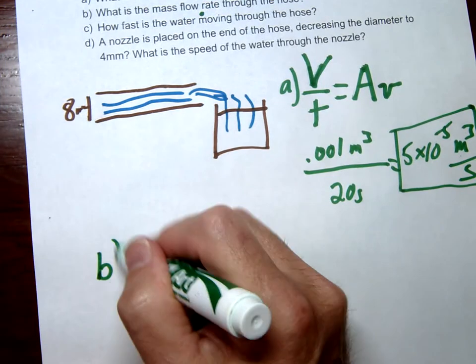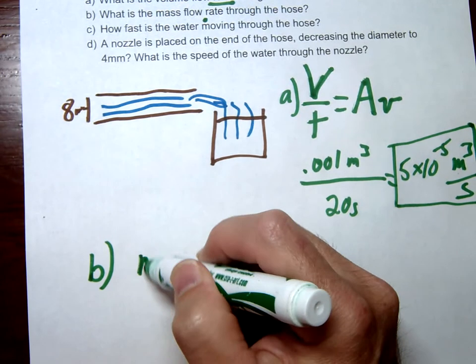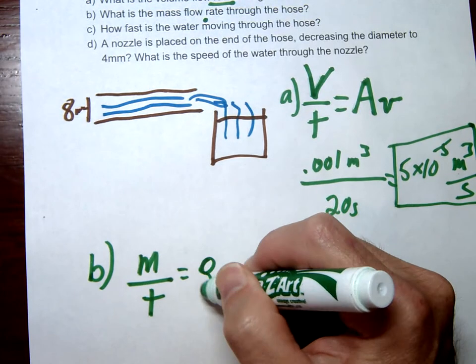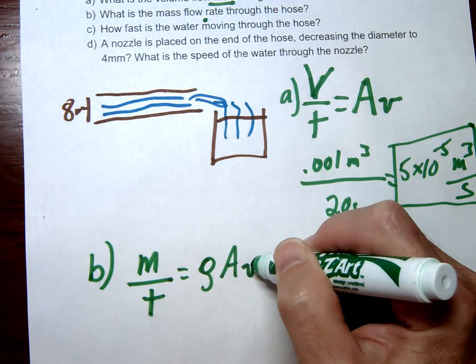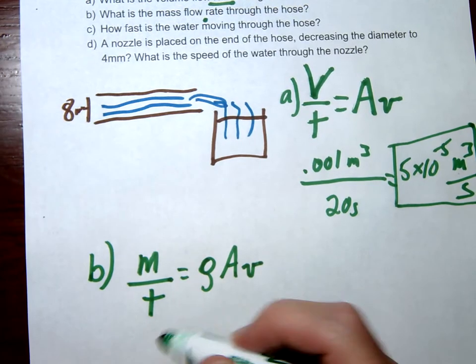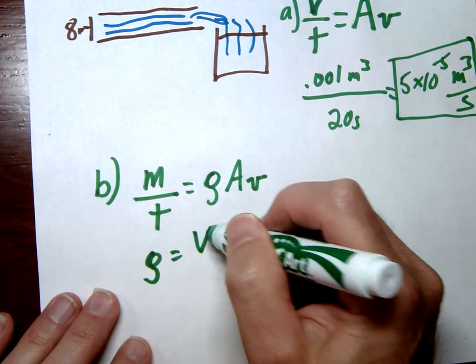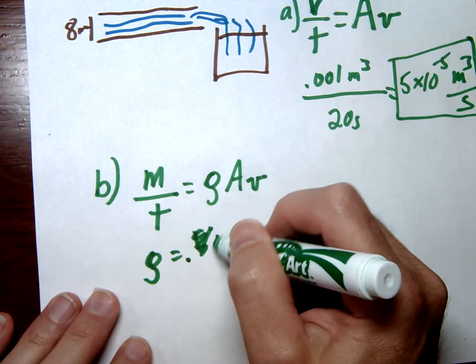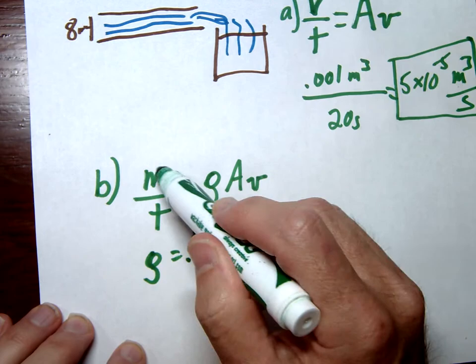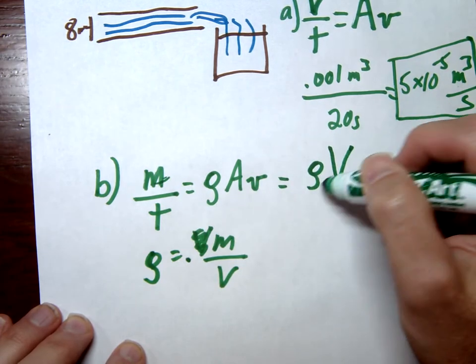So letter B is now asking for the mass flow rate. Mass flow rate, that would be again mass over time would be our mass flow rate. This could also be density times area times velocity. Or if we even take this a little step further, remember density is equal to mass over volume. And so if we rearrange this, we could also write this as density times volume over time.